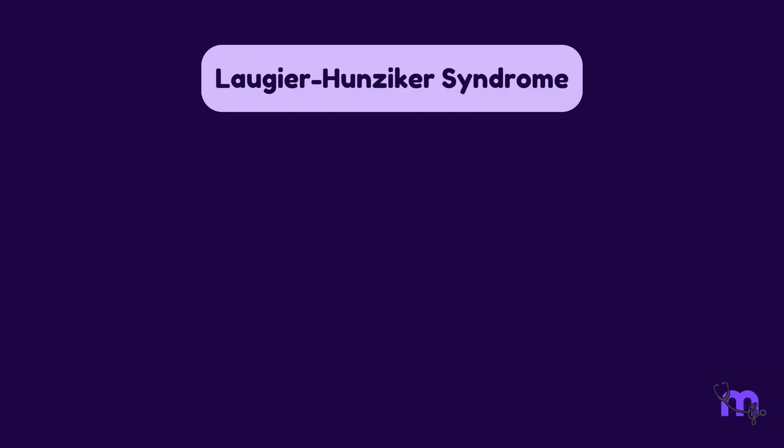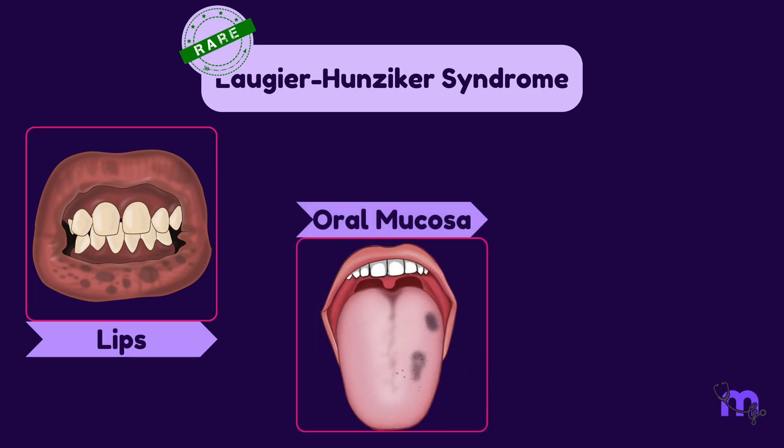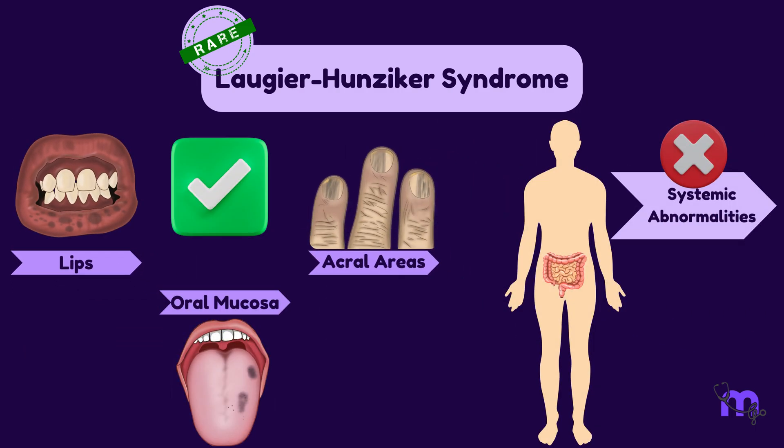Laugier-Hunziker syndrome is a rare condition characterized by macular pigmentation that primarily affects the lips, oral mucosa, and acral areas. There are no underlying systemic abnormalities associated with this condition.